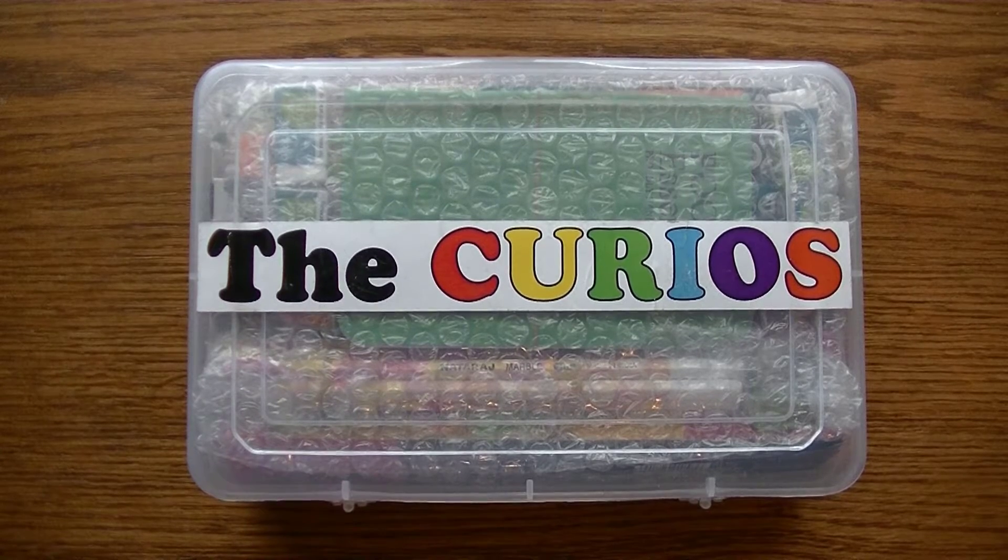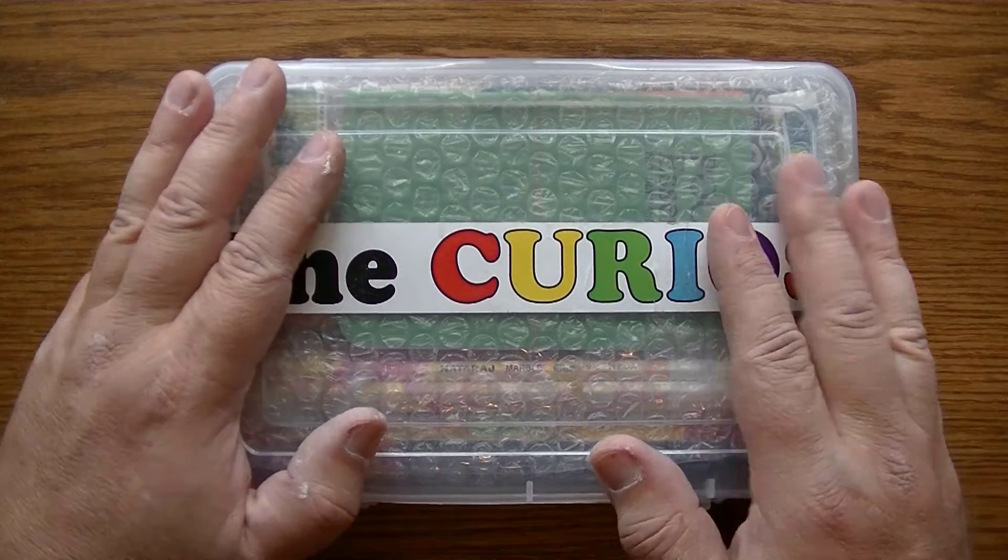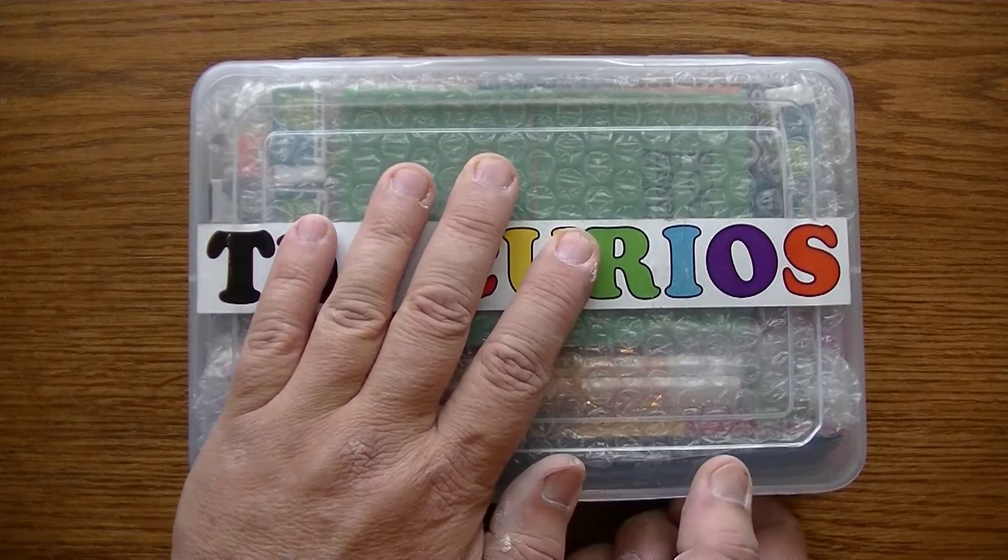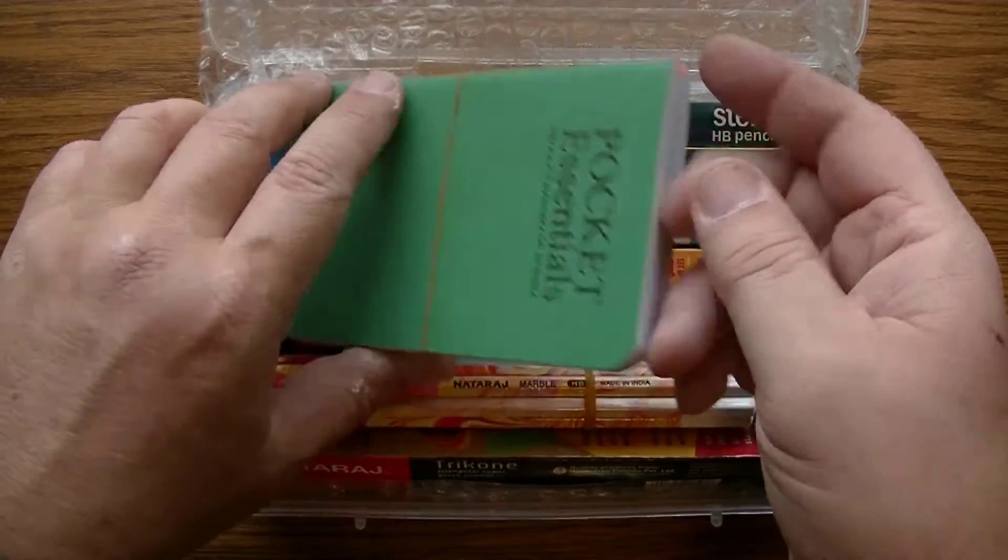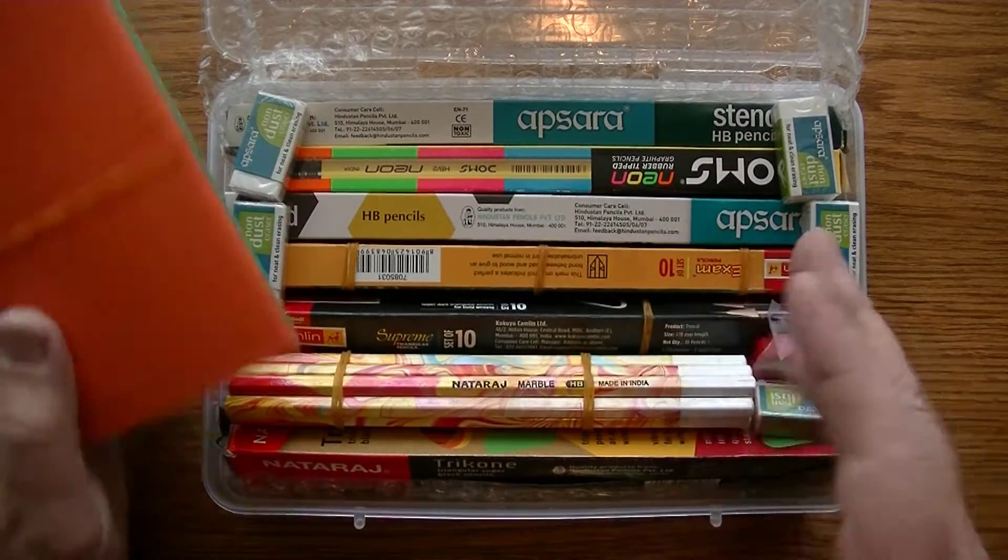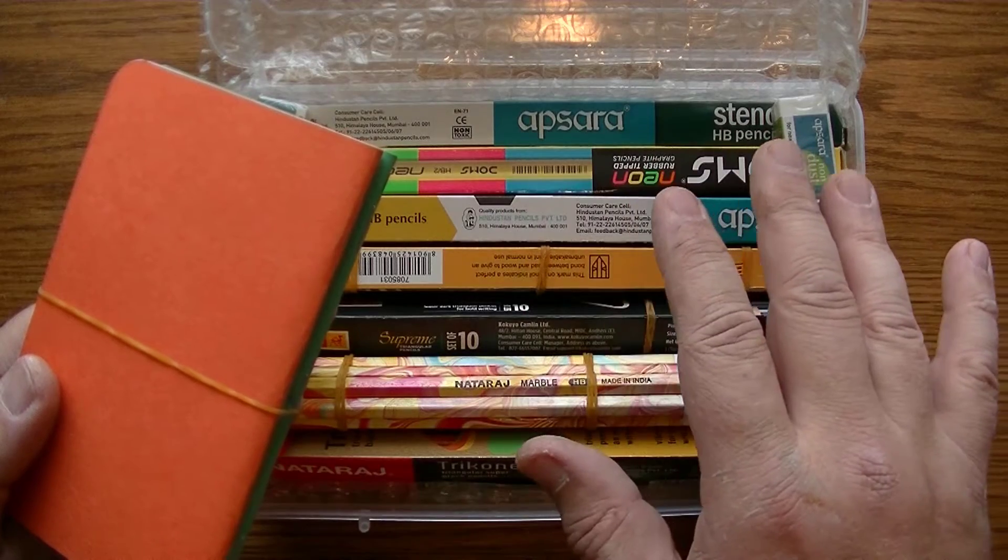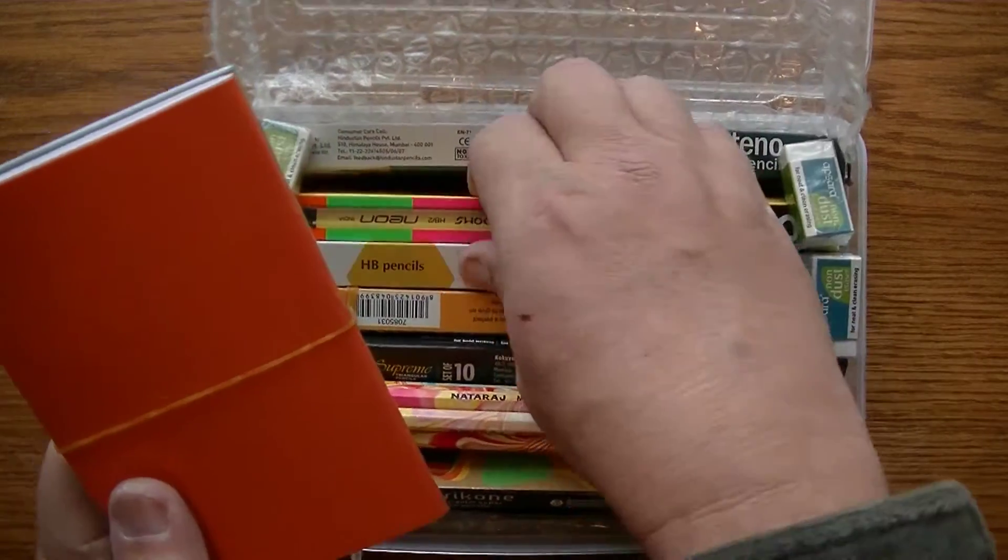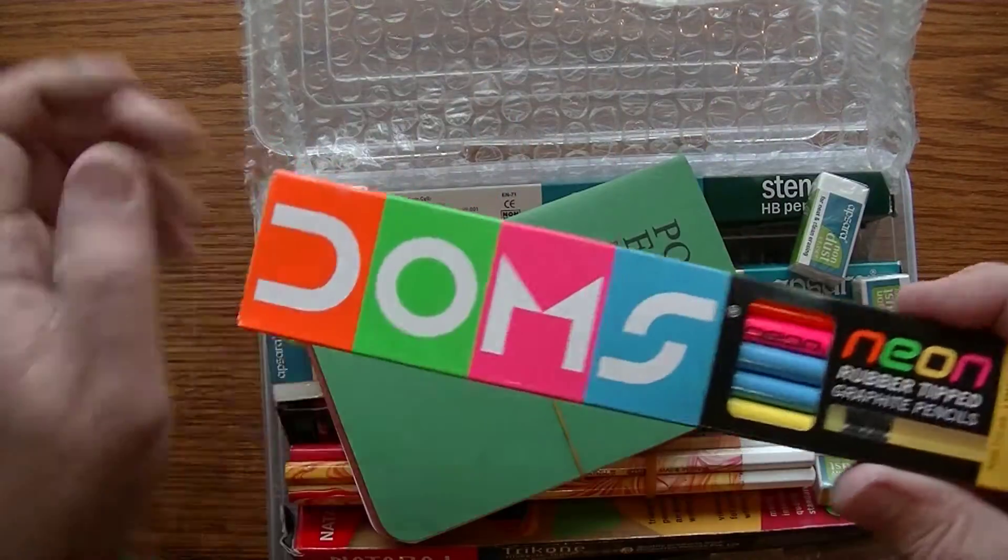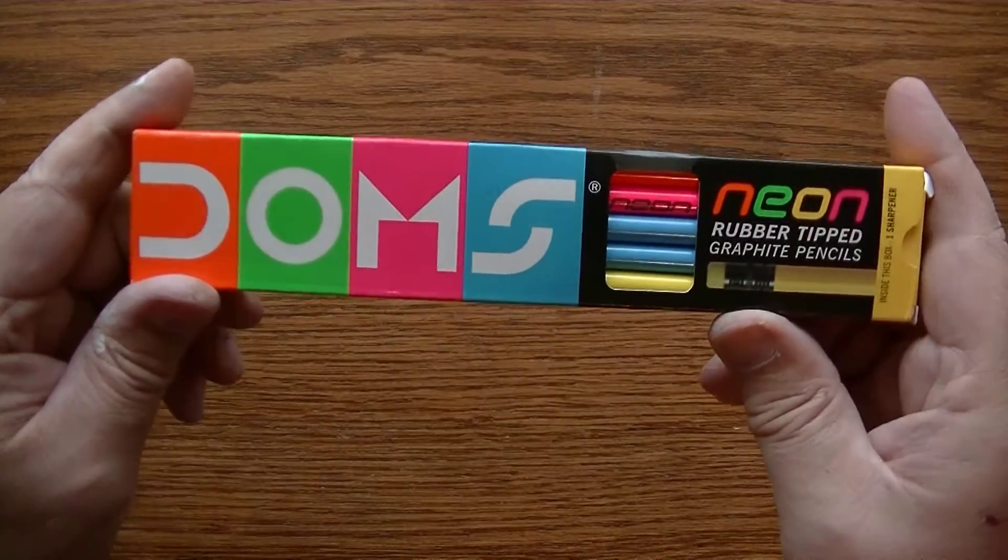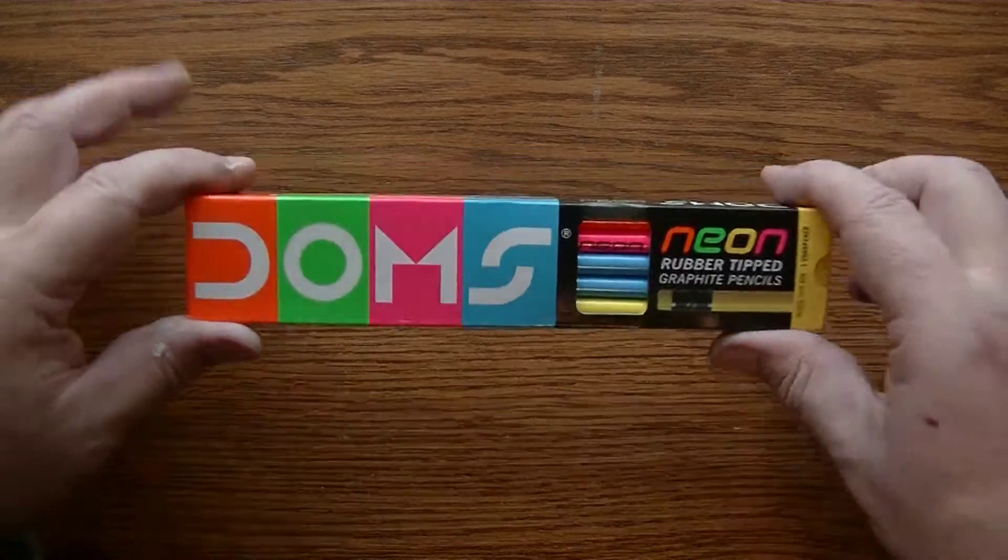Hi YouTube. Look what I just got in the mail. The good folks at Kyrgyz sent me this nice package here with all kinds of really cool goodies, but I can't cover them all in one video. So I'm going to break it up into several videos. For this one, I'm going to grab this colorful one right here and today we're going to be talking about Dom's Neon Rubber Tip Graphite Pencils. Let's get to it.